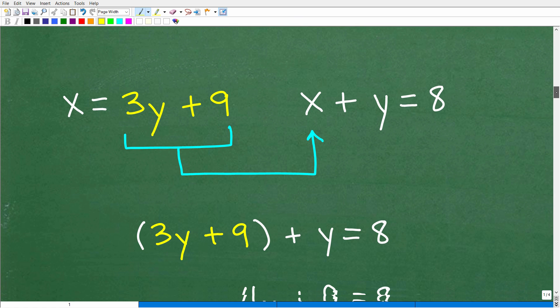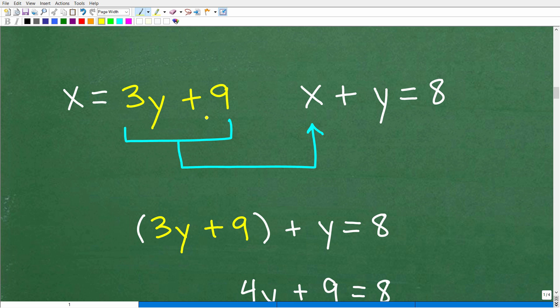OK, so let's get back to this problem now. So we have x is equal to 3y plus 9. And we have x plus y is equal to 8. So we have different choices here. But I'm like, wow, this equation's already solved for one variable. OK, now if we didn't have this equation solved for one variable, we would have to solve for one variable. That would be our first step.